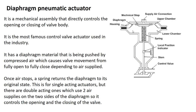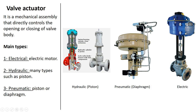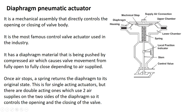Now the diaphragm pneumatic actuator — the diaphragm is like a rubber or elastic material. Air flows in through a hole and pushes it down along with a spring. With this being pushed down, the valve — a globe valve in this drawing — is pushed down or up according to the air supply. The spring acts as a reverse mechanism.